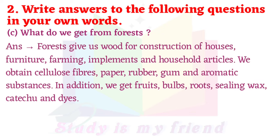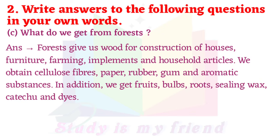C. What do we get from forests? Forests give us wood for construction of houses, furniture, farming implements and household articles. We obtain cellulose fibre, paper, rubber, gum and aromatic substances. In addition, we get fruits, bulbs, roots, sealing wax, ketchup and dyes.